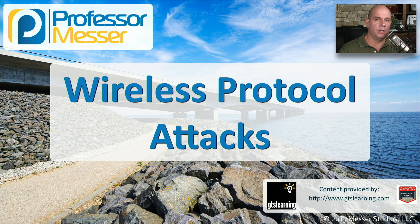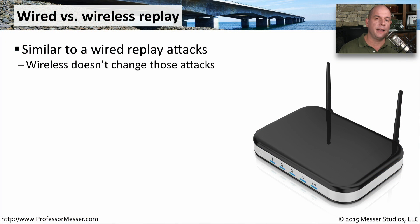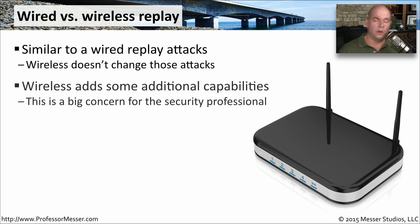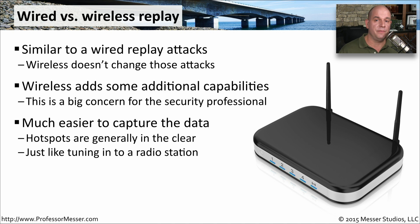Just as we have attacks on our wired networks, we also have to be aware of attacks to our wireless networks. In this video, we'll look at a number of different ways that the bad guys can use to get into your wireless network. A replay attack is one where the bad guy is recording information that you're sending, and then resends it onto the network in an attempt to gain access to a second device. On a wireless network, you can listen to everyone's conversations without needing a specialized tap or port mirror. You can sit in one place and listen to everything going by, especially on an open hotspot.